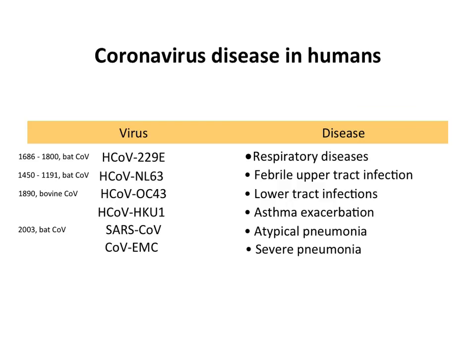Here's a summary of coronaviruses. Up until 2003, there were four known human coronaviruses, all causing mild respiratory infections. Then we added SARS in 2003 — very unusual and severe. And now we have the new coronavirus called EMC from the Arabian Peninsula, which is still an emerging story.